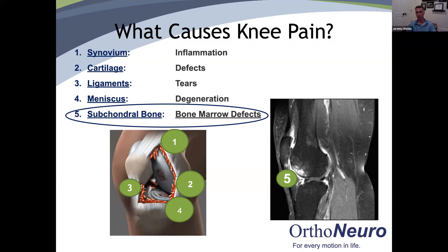Let's talk specifically about knees. Common causes for knee pain include the synovium, which is inflammation; cartilage defects; ligament tears; meniscus degeneration; and subchondral bone, where we see bone marrow defects. The synovium is that red, beefy, painful tissue. When the cartilage gets damaged, that's arthritis. When ligaments tear, it causes an unstable knee putting undue shear stresses on the cartilage. Meniscus degeneration also increases stress on the cartilage. Subchondral bone defects — the thinning of the cartilage adds increased stress across the bone, and then we see bone bruising or bone marrow defects of that subchondral bone.